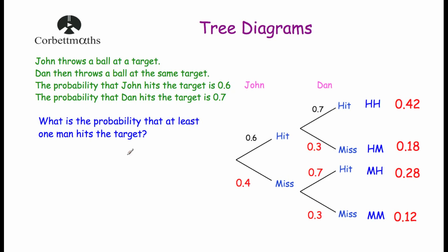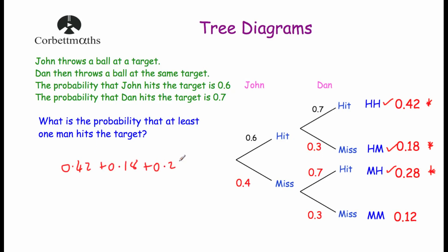The next question asks: what is the probability that at least one man hits the target? Miss-miss means neither man hits, so that's excluded. Miss-hit, hit-miss, and hit-hit all have at least one man hitting the target, so those are our three suitable outcomes. We add their probabilities: 0.42 + 0.18 + 0.28 = 0.88. So the probability of at least one man hitting the target is 0.88.